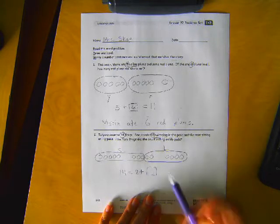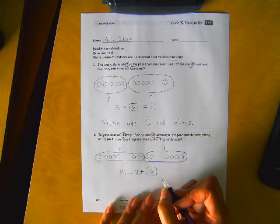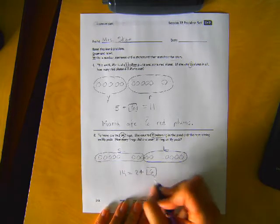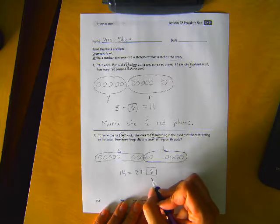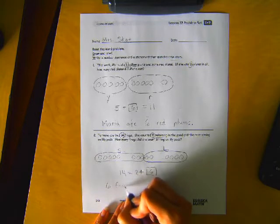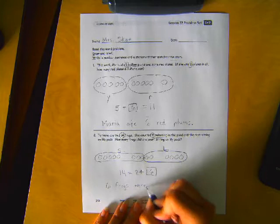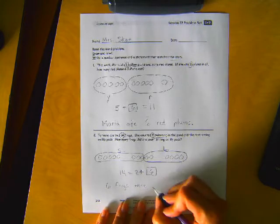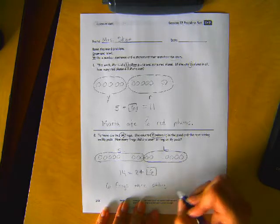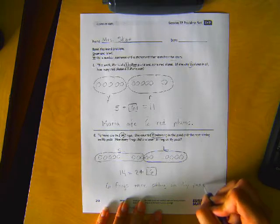One, two, three, four, five, six. So our missing number is six. So now we need to tell that in a statement. So we can say six frogs were sitting on lily pads.